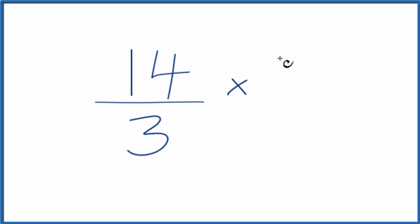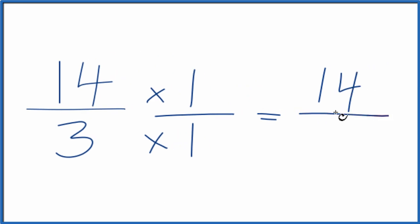So we can multiply the numerator by 1 and multiply the denominator by 1 and we'd end up with 14 times 1 is 14, 3 times 1 is 3, the same thing we started with.